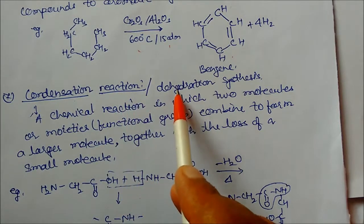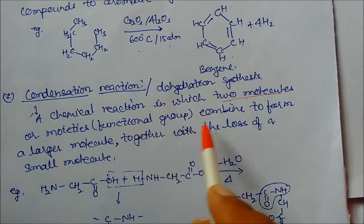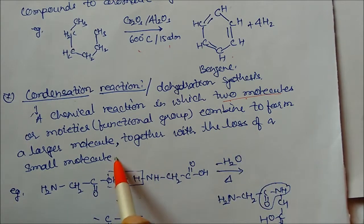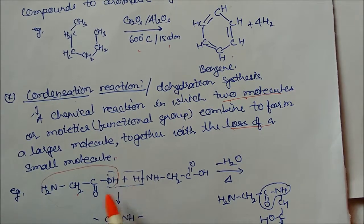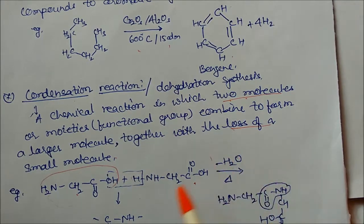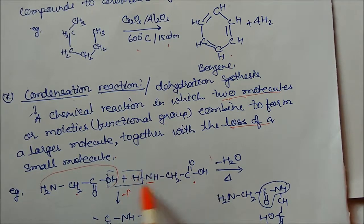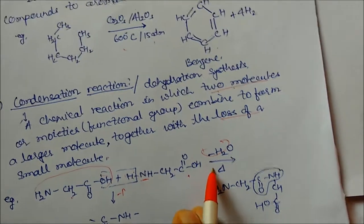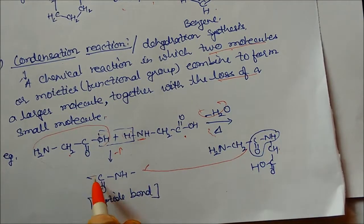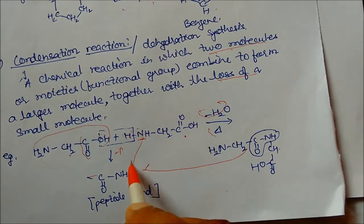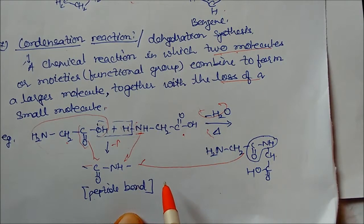Condensation reactions, also called dehydration synthesis, are chemical reactions in which two molecules or functional moieties combine to form a larger molecule with the loss of a small molecule. For example, two amino acid molecules (NH2-CH2-COOH) on heating: hydrogen from one and OH from the other combine and are released as water. The product formed contains a CO-NH linkage, which is called a peptide bond. Peptide bonds are found in proteins — all proteins are connected by peptide bonds. Thank you very much.